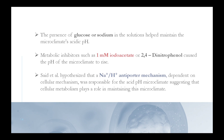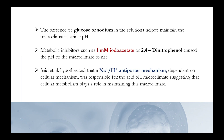The presence of glucose or sodium in the solutions helped maintain the microclimate's acidic pH. Metabolic inhibitors such as 1-millimole iodoacetate or 2,4-dinitrophenol caused the pH of the microclimate to rise. Sedd et al. hypothesized that a sodium/hydrogen antiporter mechanism, dependent on cellular metabolism, was responsible for the acid pH microclimate, suggesting that cellular metabolism plays a role in maintaining this microclimate.